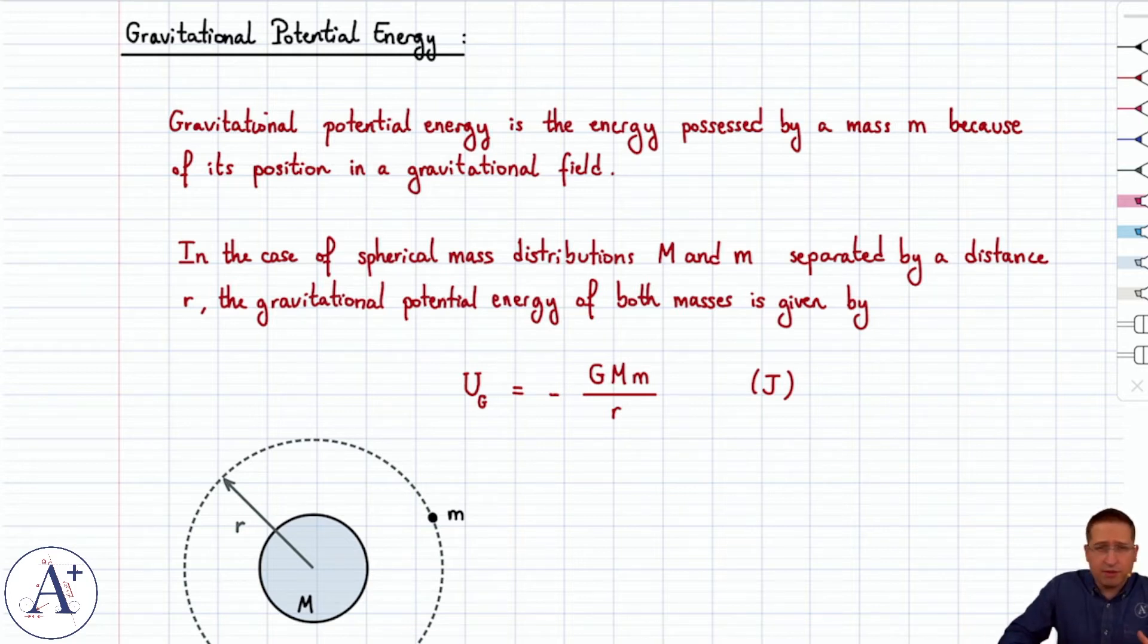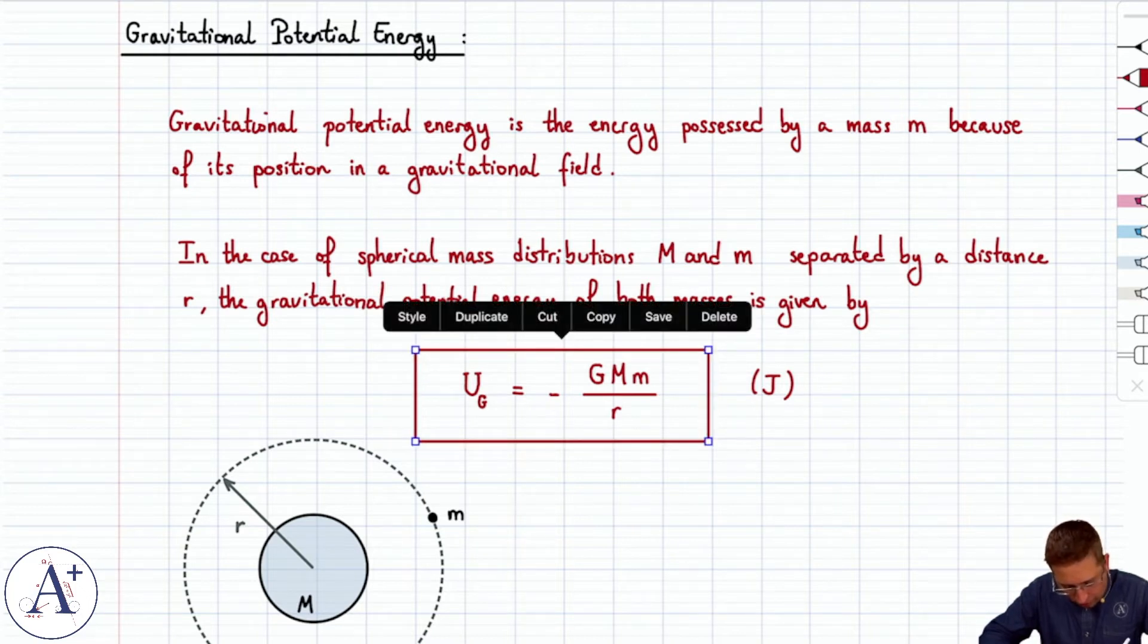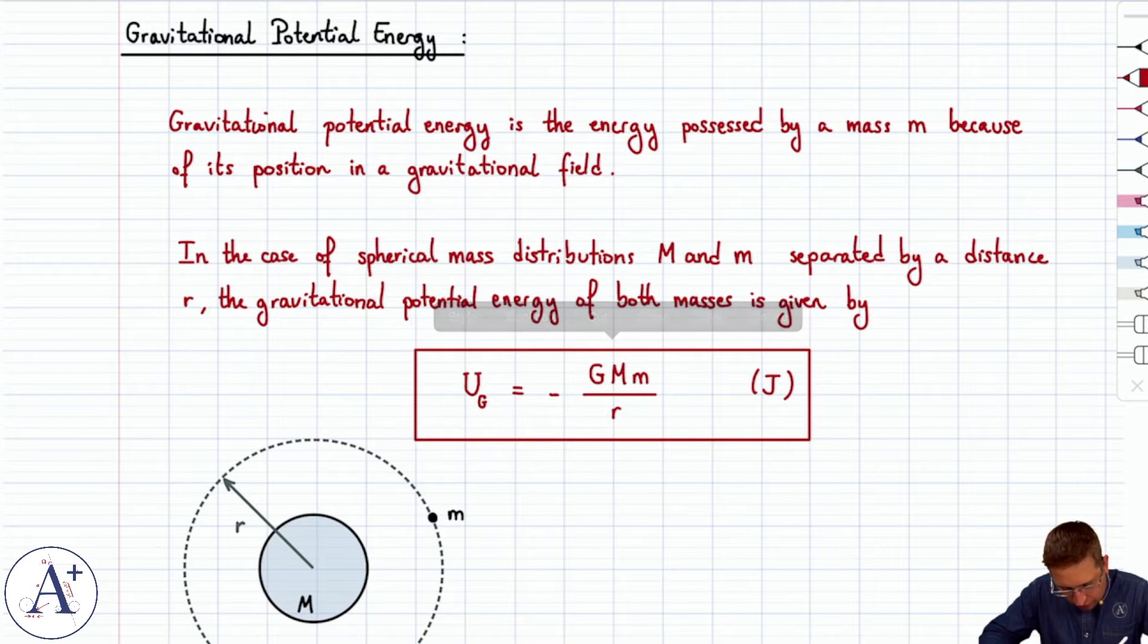And in the case of a mass little m that is in the gravitational field of some spherical planet of mass big M, the gravitational potential energy is given by U sub g equals minus G big M little m over r. Not to be confused with the force which is divided by r squared and is not necessarily negative.